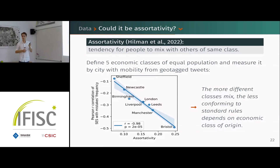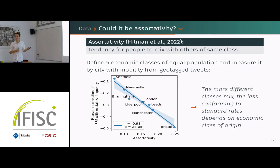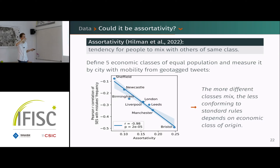We thought of looking at assortativity — the tendency of people of similar economic classes to mix with one another, as opposed to mixing with different classes. We defined economic classes with equal population in each, then measured this assortativity in each city using the mobility from the geotagged tweets.